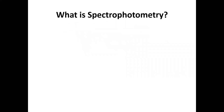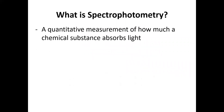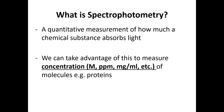So what is spectrophotometry? Spectrophotometry is a quantitative measurement of how much a chemical substance absorbs light. We can take advantage of this to measure the concentration of molecules, for example, proteins — but it doesn't have to be proteins; it can be DNA, amino acids, carbohydrates, etc. The keyword here is concentration, meaning the amount of solute in a specific volume of solvent.